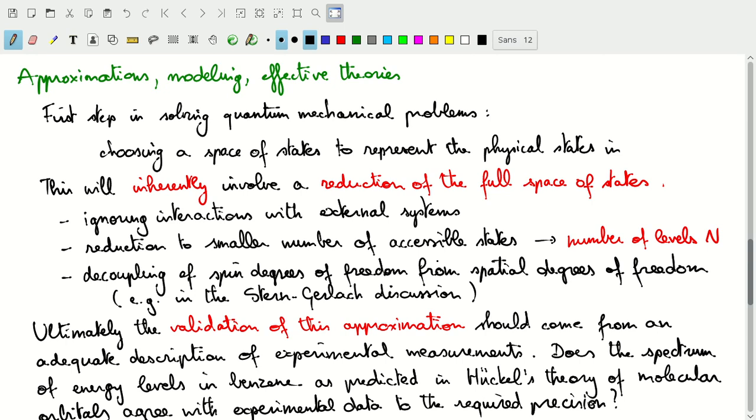Another thing that we'll need to do, or that we'll often do, is decoupling some of the degrees of freedom from other degrees of freedom. In particular, for example, in the Stern-Gerlach discussion, what we did is we decoupled the spin degrees of freedom as a quantum system from the spatial degrees of freedom as a quantum system.